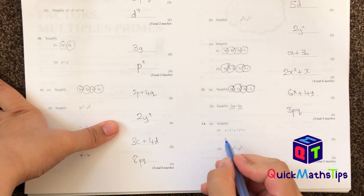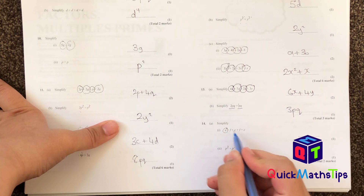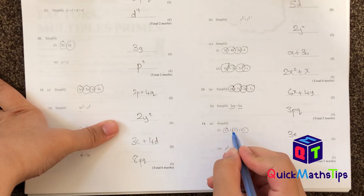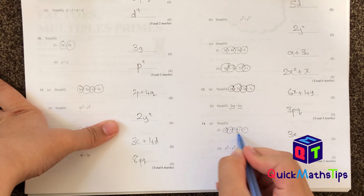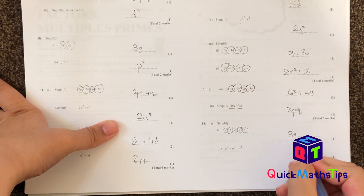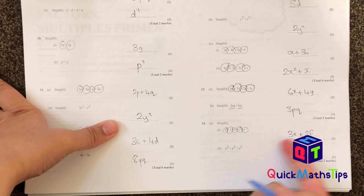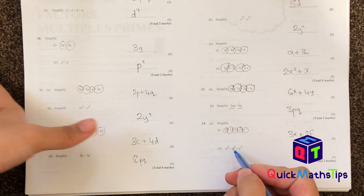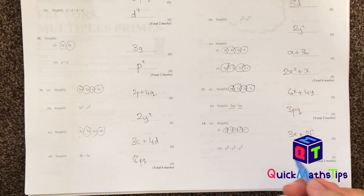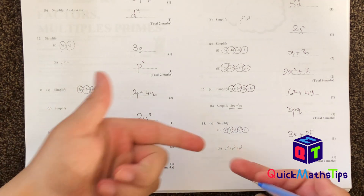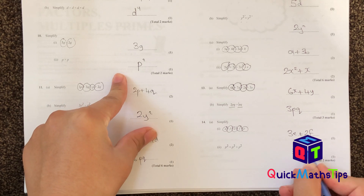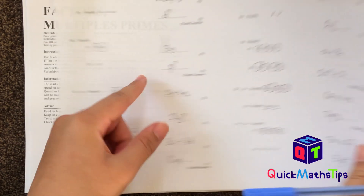Now simplify: I've got 1, 2, 3 E's adding together, so this gives me 3E. I've got 1 and 2 F's, so I add those together and that gives me 2F — so I've got 3E plus 2F. Here it says P squared plus P squared plus P squared — how many P squareds do I have? I have three of them, so this gives me 3P squared.